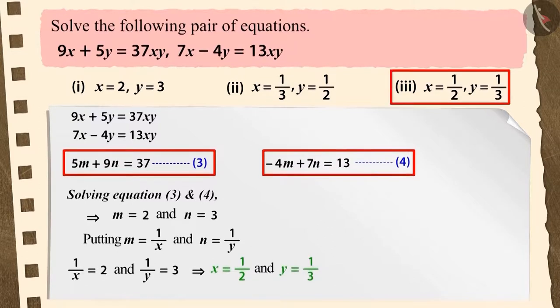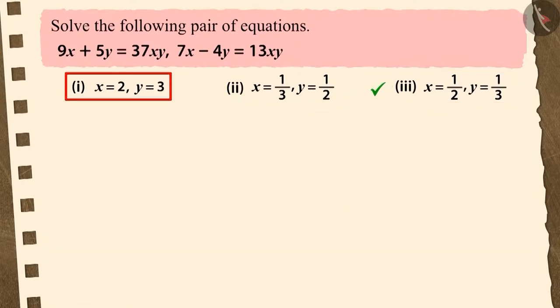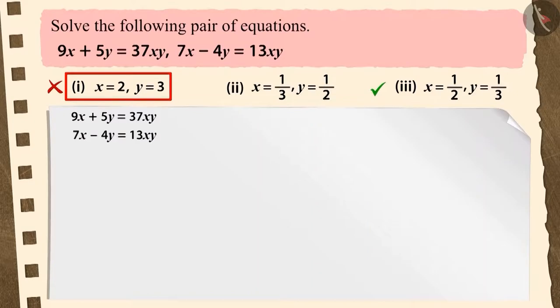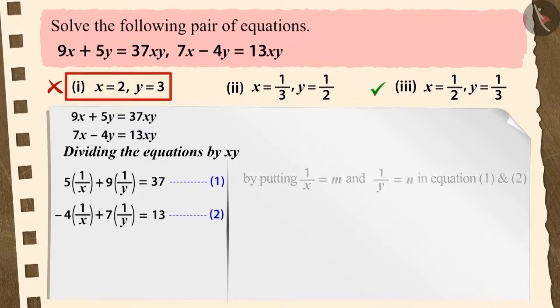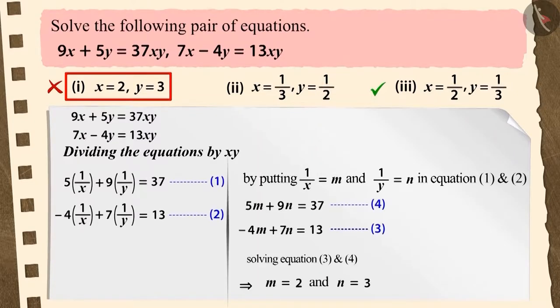Therefore, option three is the correct answer. It was a nice try if you selected option one, but this answer is wrong because while solving the question you got the values of m and n but you didn't solve it further. After taking these values of m and n, you selected the first option, then the answer is incorrect.